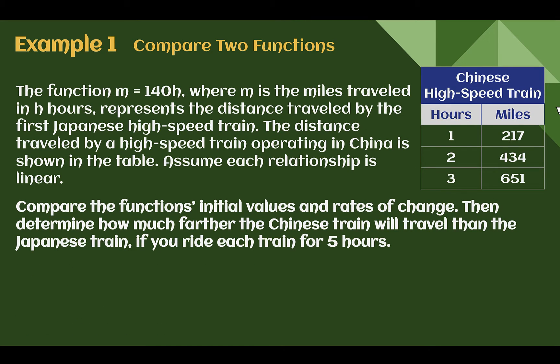Example 1. Compare two functions. The function m equals 140h, where m is the miles traveled in h hours, represents the distance traveled by the first Japanese high-speed train. The distance traveled by a high-speed train operating in China is shown in the table. Assume each relationship is linear. Compare the function's initial values and rates of change, then determine how much farther the Chinese train will travel than the Japanese train, if you ride each train for 5 hours.